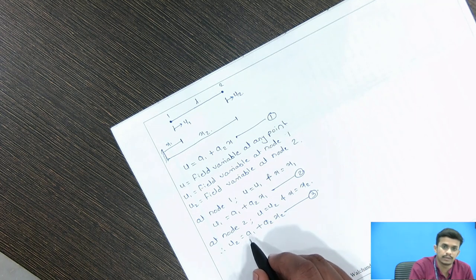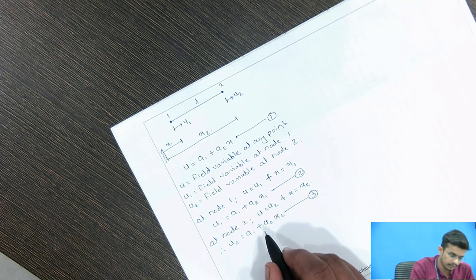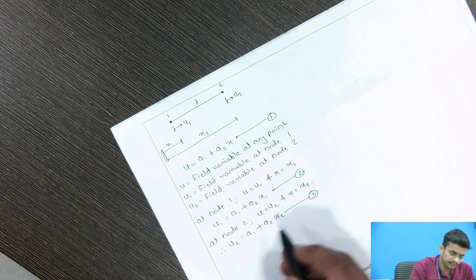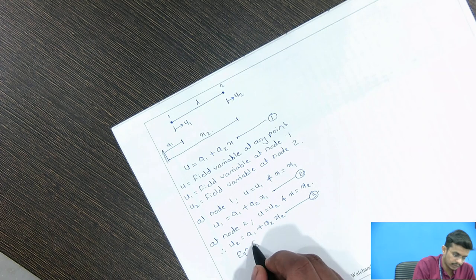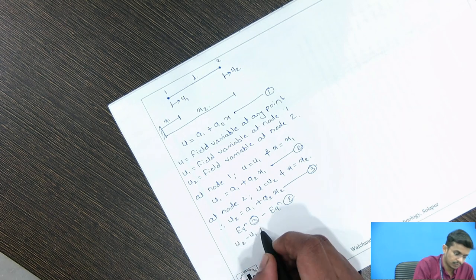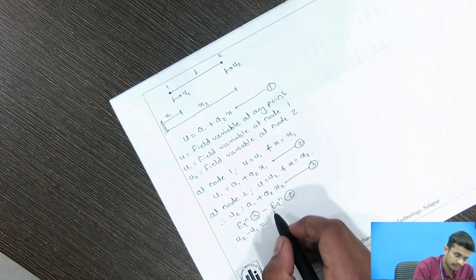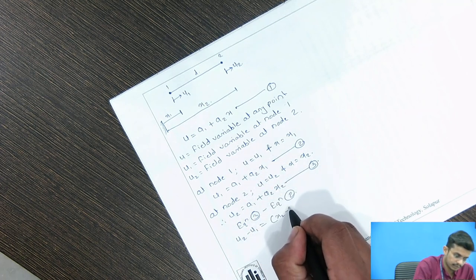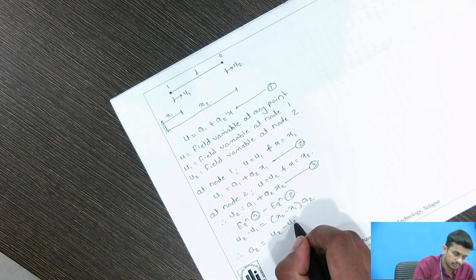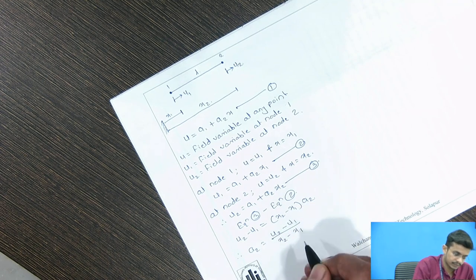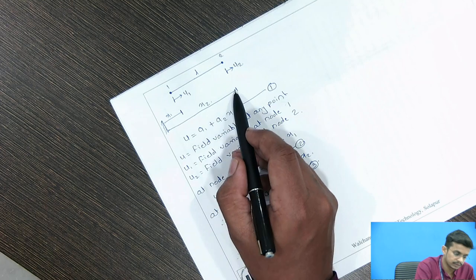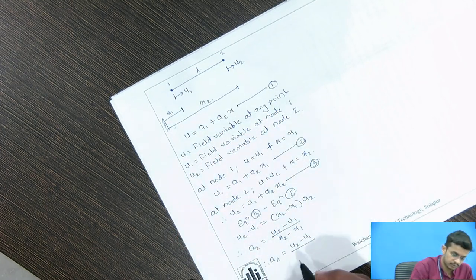Now we need to find the values of A1 and A2 by solving equations 2 and 3. Subtracting equation 2 from equation 3 gives U2 minus U1 equals (X2 minus X1) times A2. Therefore, A2 equals (U2 minus U1) divided by (X2 minus X1), and since X2 minus X1 is the length of the element L, A2 equals (U2 minus U1) divided by L.